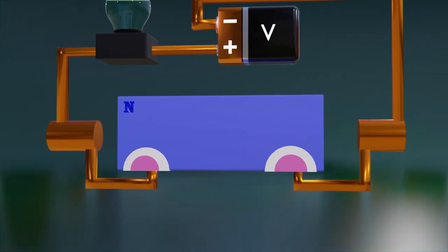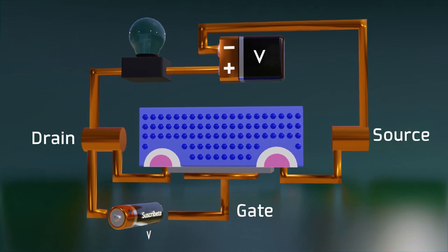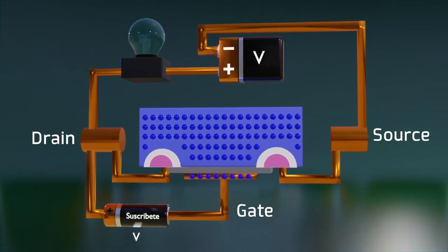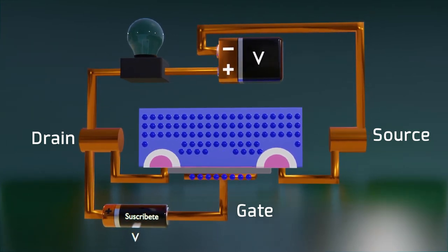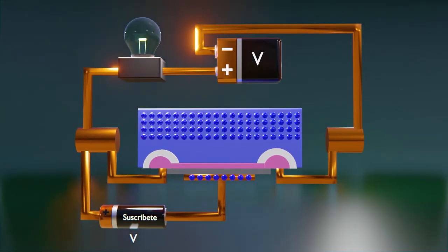To this combination was also added a dielectric and an electrode or gate which, when applying a voltage, forced the electrons of the channel to move towards the edges, reducing the depletion region and therefore allowing the passage of current.